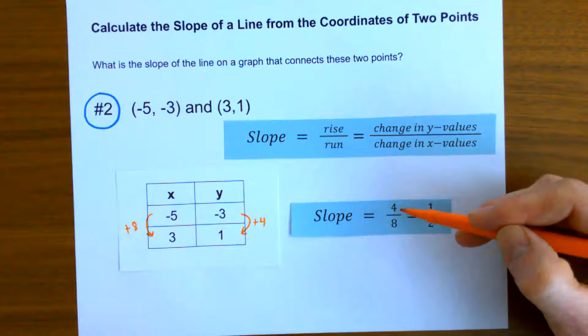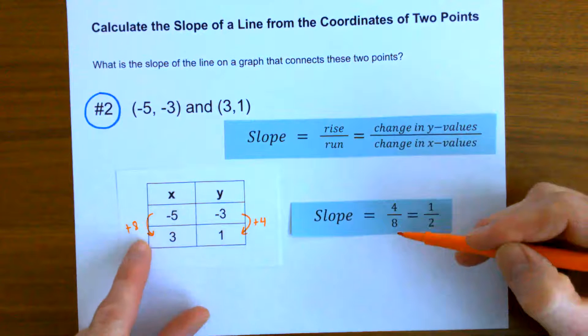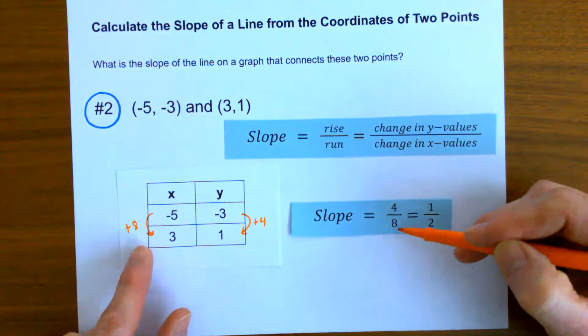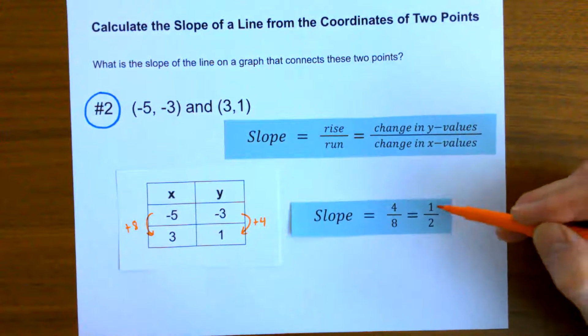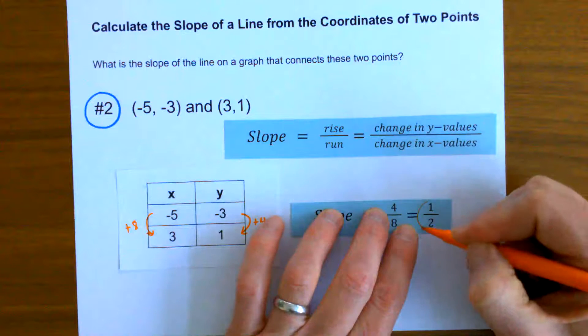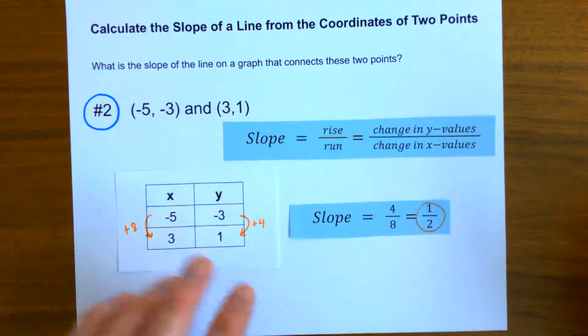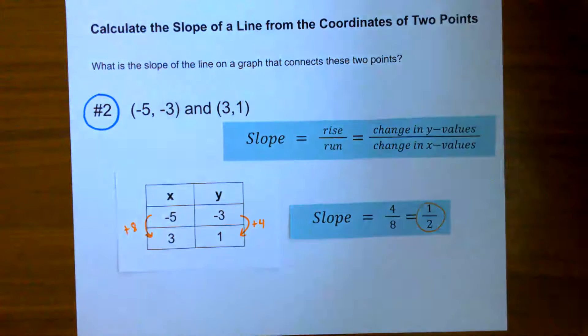Change in y over change in x, four over eight. I gain four y's every time I gain eight x's. Or if I simplify that, one over two. I gain one y for every two x's. So there would be my slope of the line that connects those points, and I didn't even need to graph it. Hope that helps.